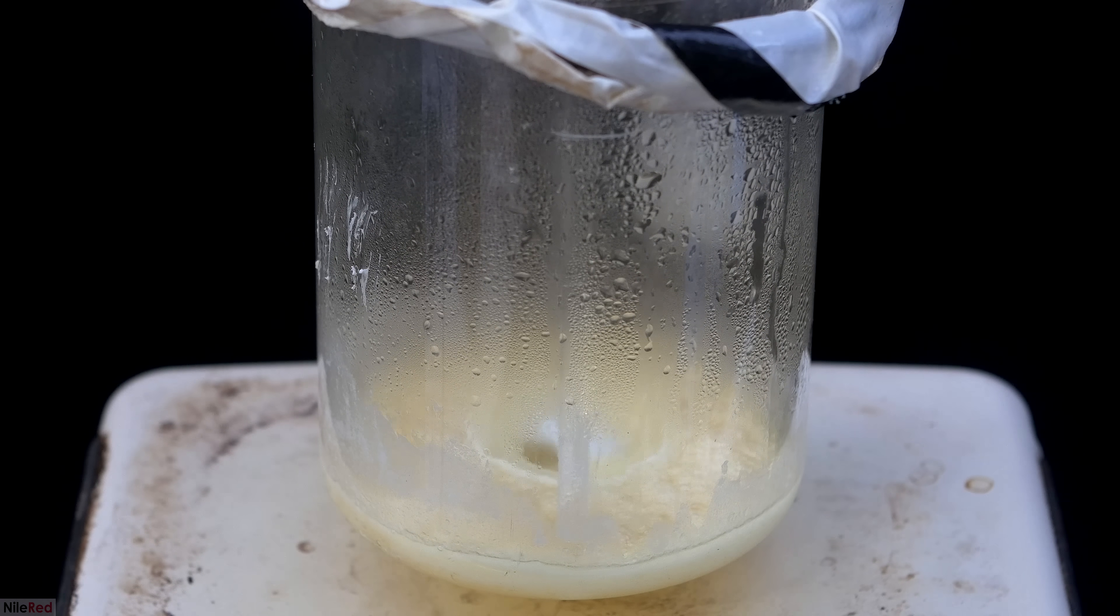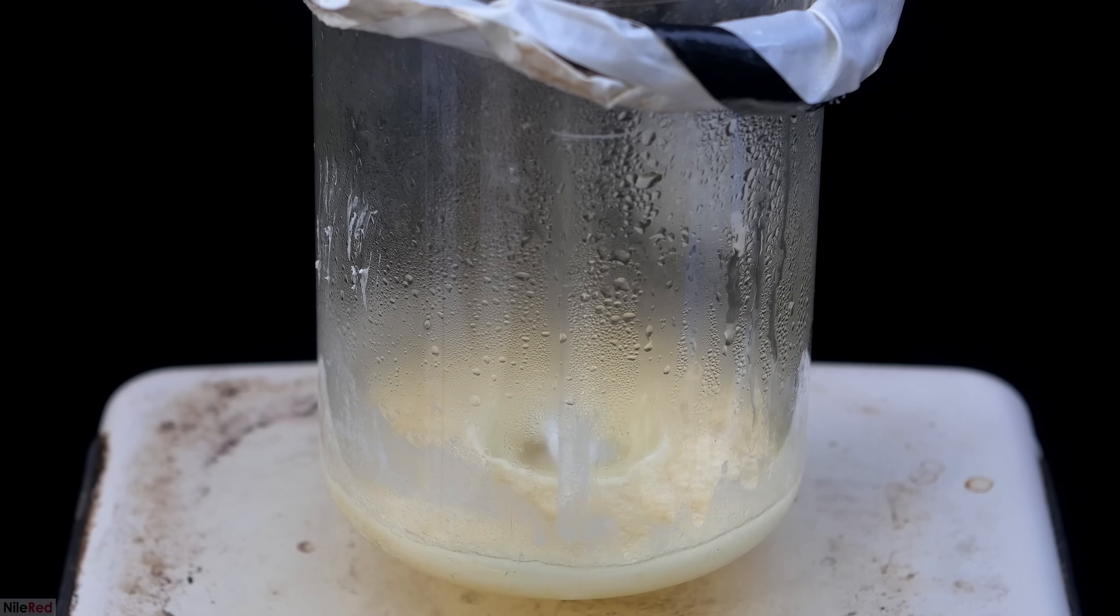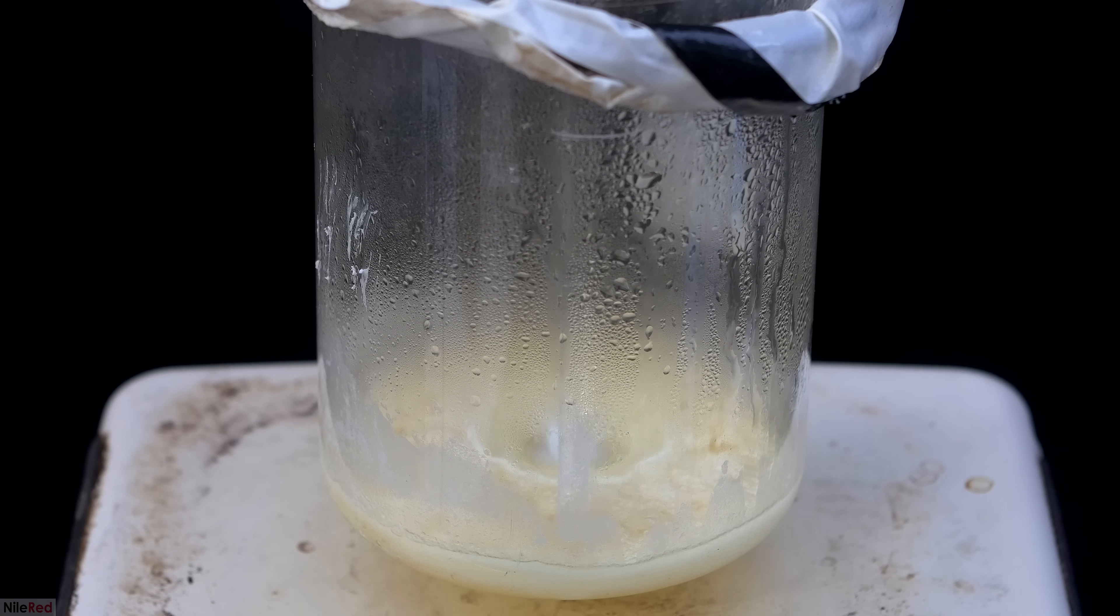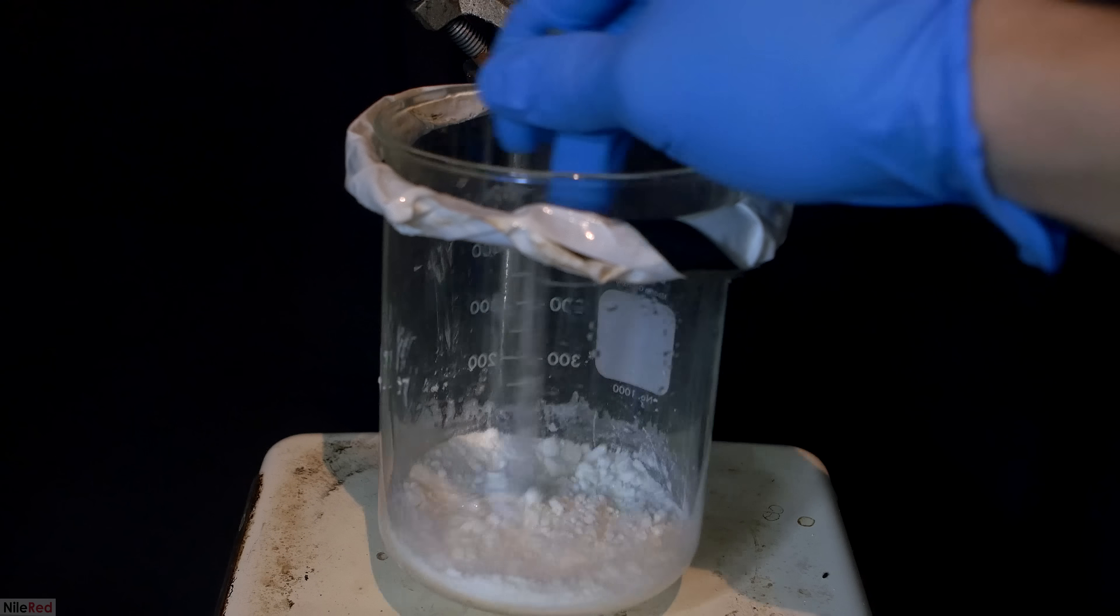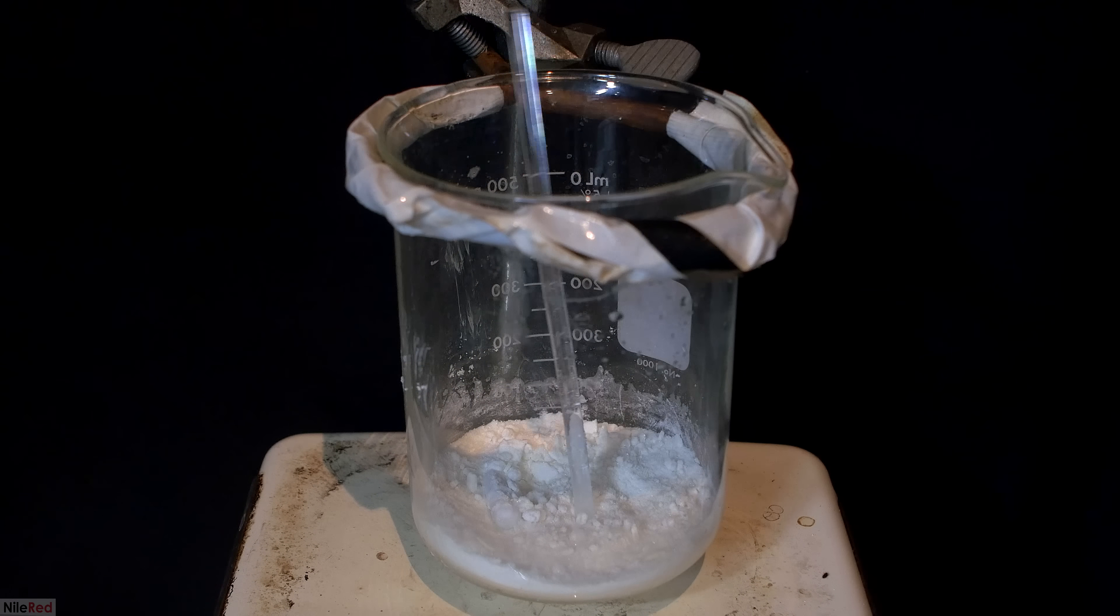As we get very close to getting rid of the last bit of water, some nitrogen dioxide gas starts to come off. Right now, it looks like things have a slight yellow color, and this is due to the nitrogen dioxide, but once we get rid of all of the gas, we should be left with a nice white salt. Eventually, pretty much all of the water is gone, and we're left with some nice white mercuric chloride.